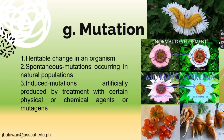For mutation, first we have the definition: it is a heritable change in an organism. Second is spontaneous mutations, occurring in natural populations. Third is induced mutations, which are artificially produced by treatment with certain physical or chemical agents called mutagens. Due to mutations, the shapes and colors of the plants and fruits can change.